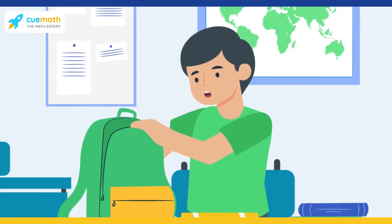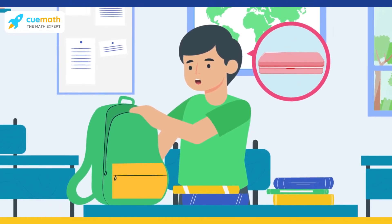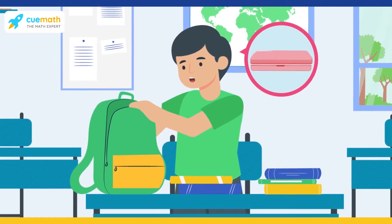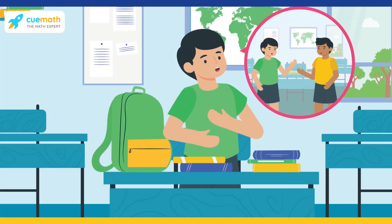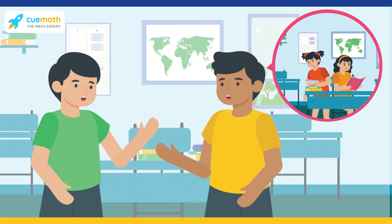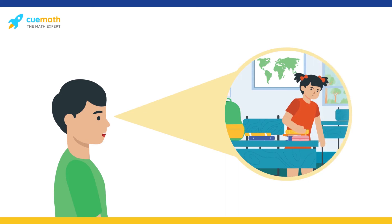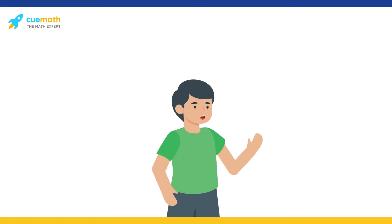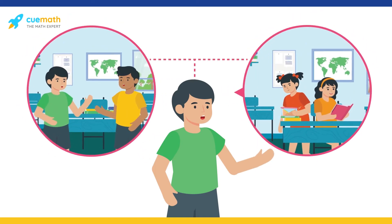Peter was looking for a pencil when he realized his pencil box was missing. As he searched for the pencil box, he remembered an incident that his friend Adam had described to him. Adam had heard that their classmate Eva once stole another student's lunchbox. Peter now suspected Eva of stealing his pencil box, though he had no evidence. Peter thought Eva was the culprit based on what Adam said.